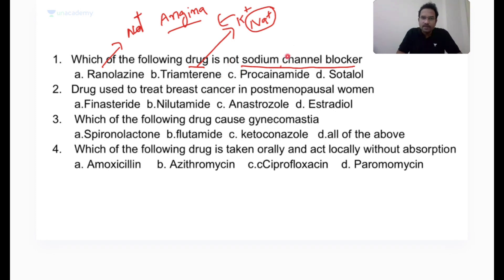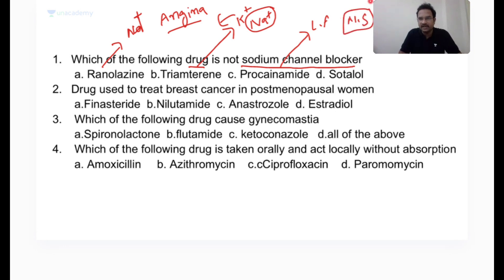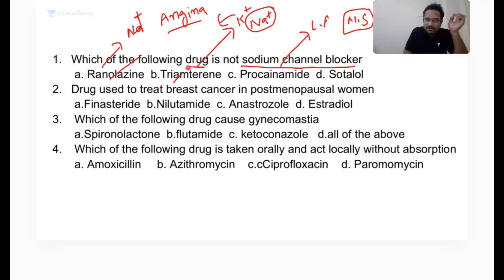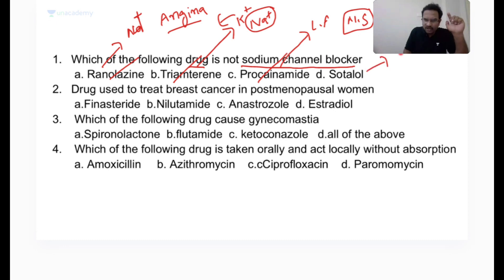Procainamide acts as a local anesthetic at nervous tissue by blocking sodium channels. So: ranolazine is a sodium channel blocker at the cardiovascular system, triamterene is a sodium channel blocker at the urinary system, procainamide is a sodium channel blocker at the nervous system, and sotalol is a potassium channel blocker.